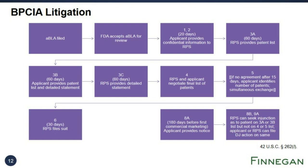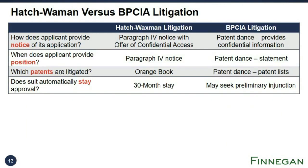So how is BIPCA litigation different from Hatch-Waxman litigation? Four differences are shown on this slide. First, in Hatch-Waxman litigation, the applicant provides notice through the Paragraph 4 notice; in BIPCA litigation, this occurs during the patent dance. Second, in Hatch-Waxman, the applicant first provides invalidity and non-infringement positions in the Paragraph 4 notice, but in BIPCA this occurs during the patent dance. Third, the patents litigated in Hatch-Waxman are generally those listed in the Orange Book, whereas BIPCA litigation generally involves patents identified during the patent dance. Fourth, filing a Hatch-Waxman litigation triggers a 30-month stay of approval, but this is not available in BIPCA litigation—instead, the patent owner may need to seek a preliminary injunction.